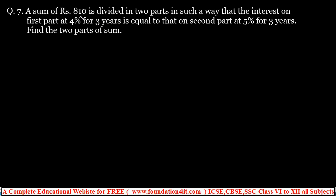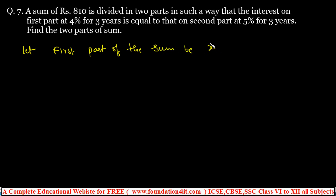Problem 7 (dividing type): A sum of ₹810 is divided into two parts such that the simple interest on the first part at 4% for 3 years equals the simple interest on the second part at 5% for 3 years. Find the two parts. Let the first part be X, so the second part is 810 − X. Since both interests are equal: X×3×4/100 = (810−X)×3×5/100.